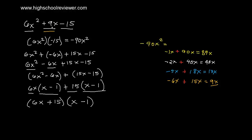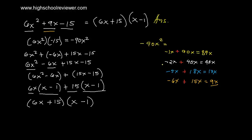Therefore, 6x squared plus 9x minus 15 in factored form is the quantity of 6x plus 15 multiplied by the quantity of x minus 1. This is our final answer.